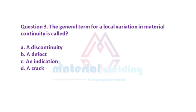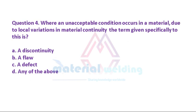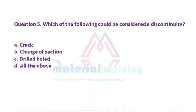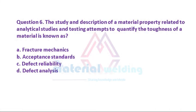Question 3: The general term for a local variation in material continuity is called: A. A discontinuity. B. A defect. C. An indication. D. A crack. Question 4: Where an unacceptable condition occurs in a material due to local variations in material continuity, the term given specifically to this is: A. A discontinuity. B. A flaw. C. A defect. D. Any of the above. Question 5: Which of the following could be considered a discontinuity? A. A crack. B. Change of section. C. Drilled hole. D. All the above.